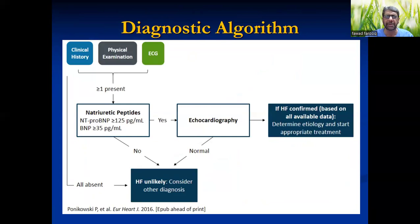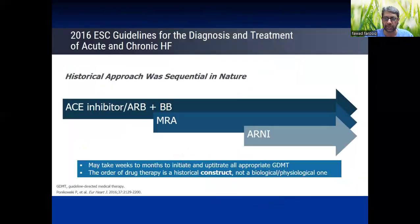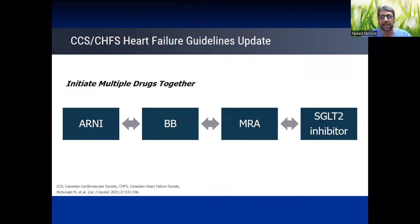Quick workup: history, examination, ECG, NT-proBNP raised, echocardiography, and then coming to the diagnosis of HFrEF. Previously, we used to give ACE inhibitor, then beta blocker, then MRA, then ARNI, then RAS blockers.